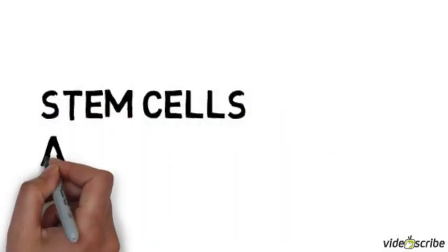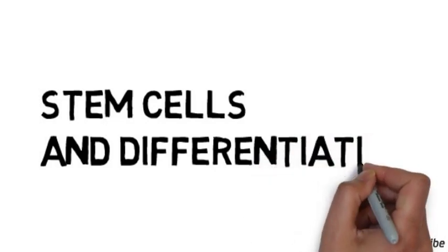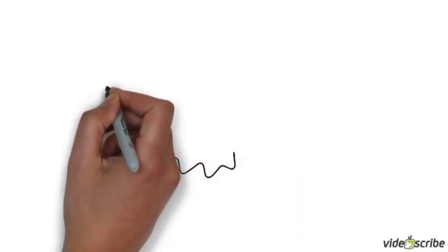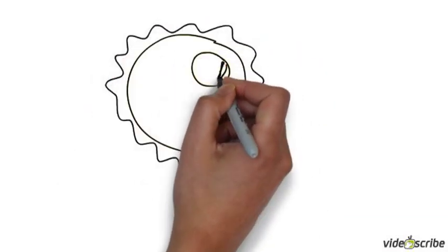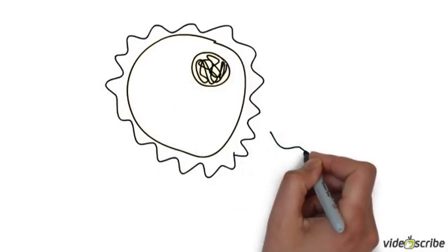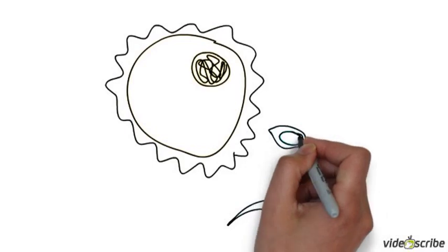This video is going to look at stem cells and differentiation. We all come from the fusion between a sperm cell and an egg cell, and all our cells have come from that. All cells are genetically identical to this original cell.